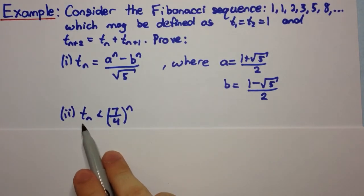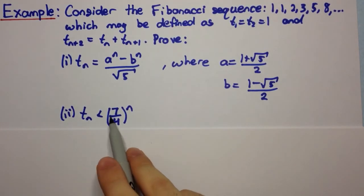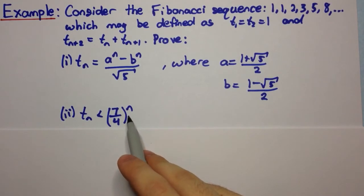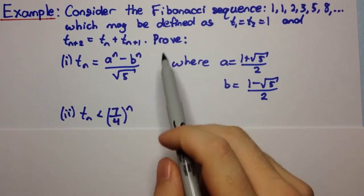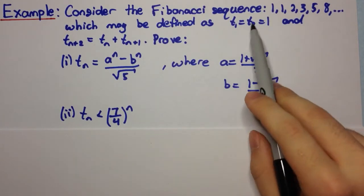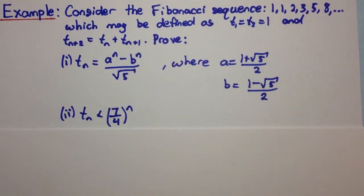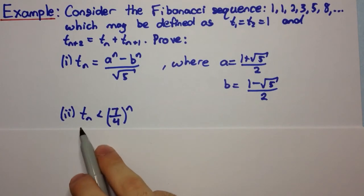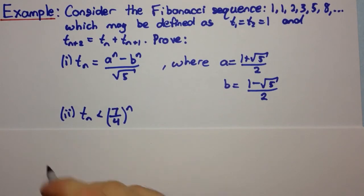We need to prove here that t_n is less than (7/4)^n. And we're working with the Fibonacci sequence. It has all these definitions for the Fibonacci sequence, which you can have a look at by yourself.